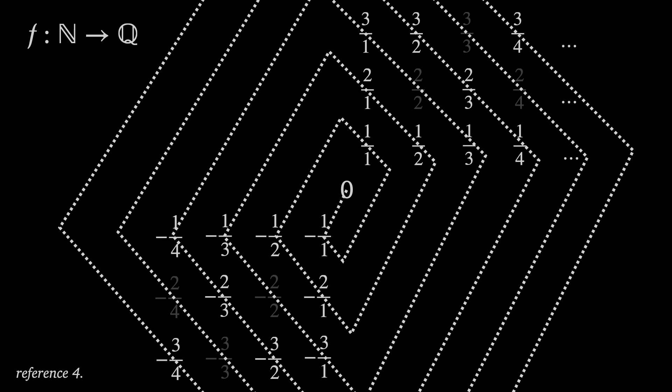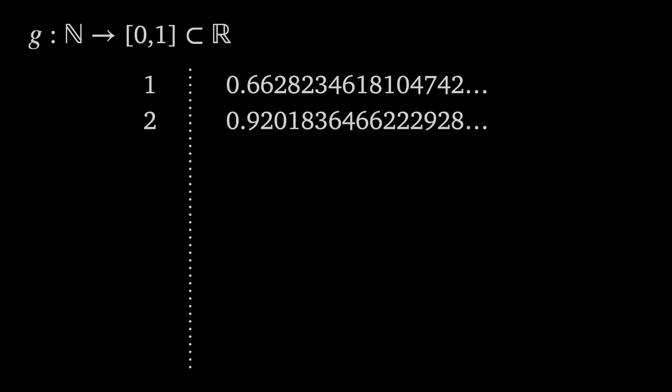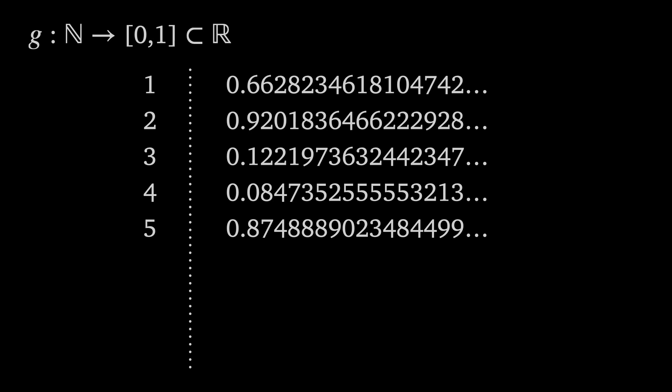However, the cardinality of the real numbers is strictly greater than that of the natural numbers. In fact, the real numbers between 0 and 1 is larger than the set of natural numbers. The following is known as Cantor's diagonalization argument. Let g be a function from N to the interval (0,1) in R. We can line up the natural numbers with the real numbers. Let's assume we've associated all the real numbers between 0 and 1 with the corresponding natural number.